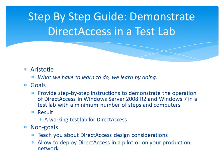Aristotle once said, what we have to learn to do, we learn by doing. To that end, this document provides you with step-by-step instructions using a minimum number of steps and a minimum number of computers to demonstrate the operation of Direct Access in a test lab using computers running Windows Server 2008 R2 or Windows 7. The result is a working test lab for Direct Access to show its functionality and act as a starting point for future learning about Direct Access and for an eventual deployment in a pilot or production capacity on your network.